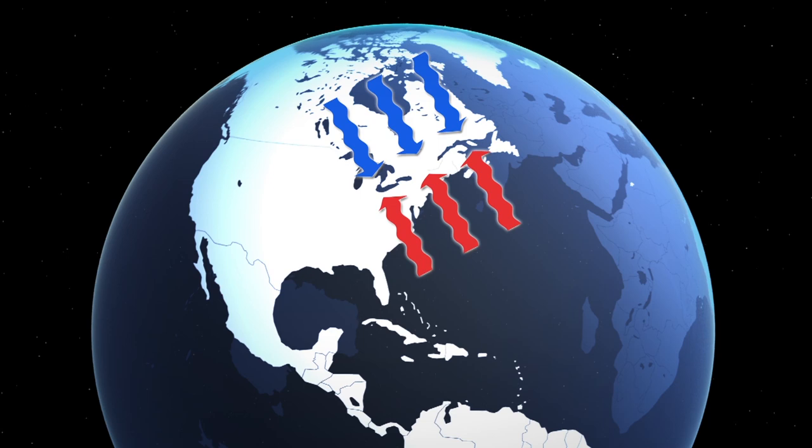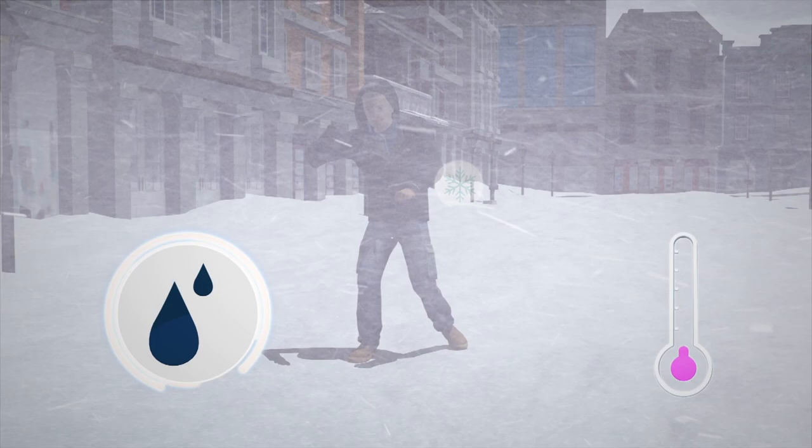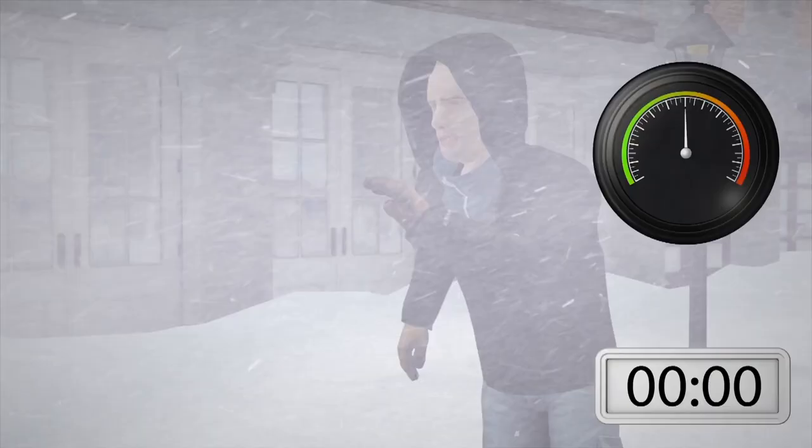One condition required for a blizzard to form is a mass of warm air rising over cold air. This causes strong cold winds and precipitation to fall. A blizzard will then occur if temperatures are below freezing at ground level and in the clouds, and there is enough moisture in the air to allow clouds and snow to form.